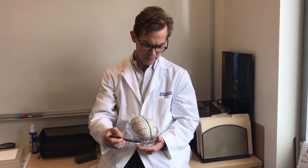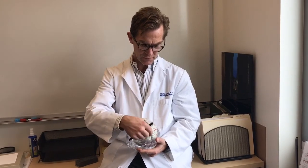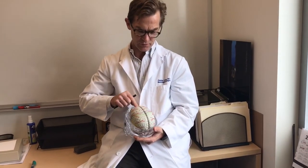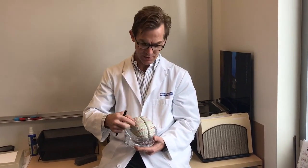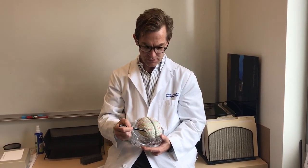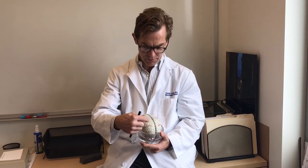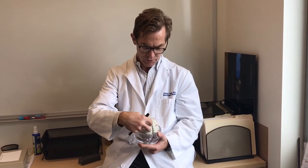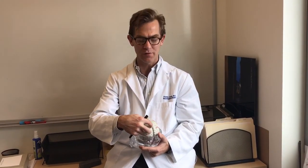SSS stands for superior sagittal sinus. As I mentioned, there's a giant vein that goes right down the middle between the left and the right side. The person said it was in the parietal near occipital, so this is occipital, this is parietal, so a tumor in this area, what would be the danger of taking it out?